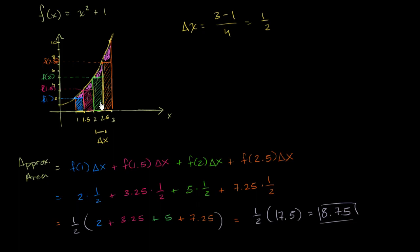In the next few videos, we're going to try to generalize this to situations where we have an arbitrary function and an arbitrary number of rectangles. We'll also look at rectangles where we define the height not by the left boundary, but by the right boundary or by the midpoint. Or maybe we don't use rectangles at all — maybe we use things like trapezoids.